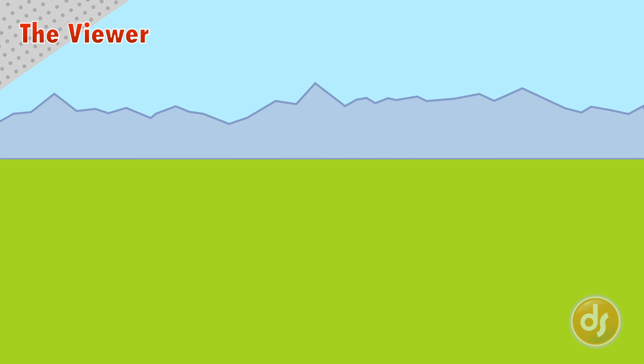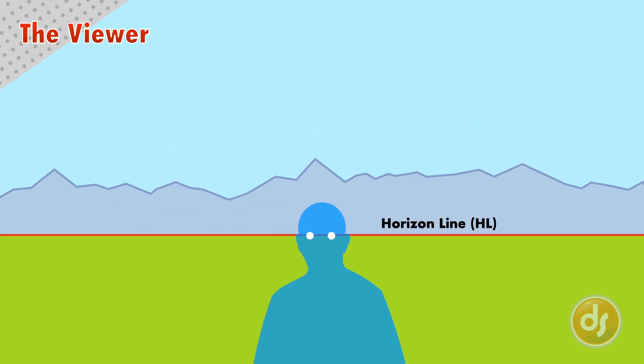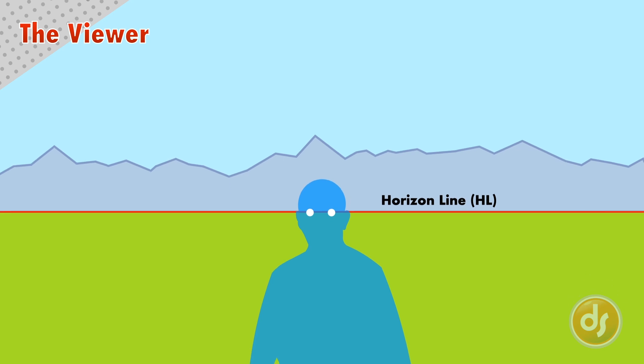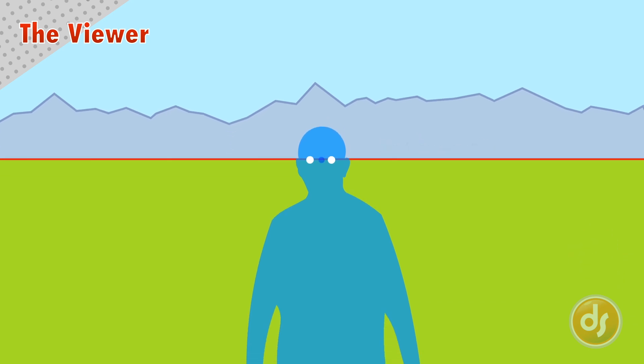Linear Perspective is always based on a single viewer looking out at a scene. At the viewer's eye level is the horizon line, which separates the ground plane from the sky. If the viewer sits down, the horizon line will track with their viewpoint and lower, or rise when they stand. A point between the viewer's eyes is called the center of vision. This will become important later.